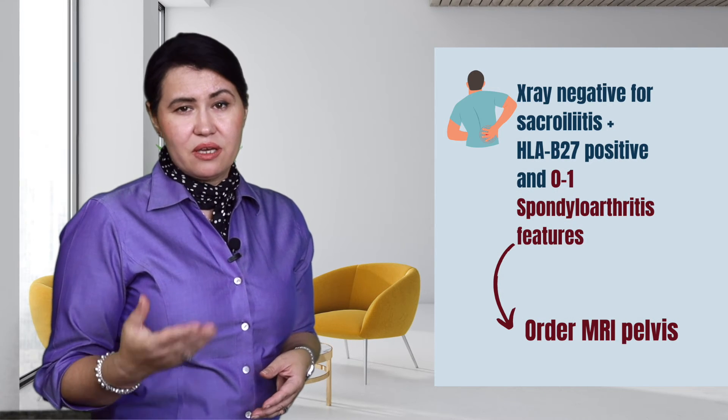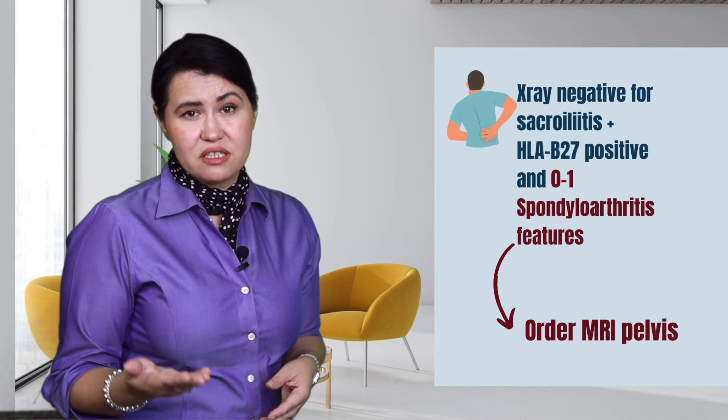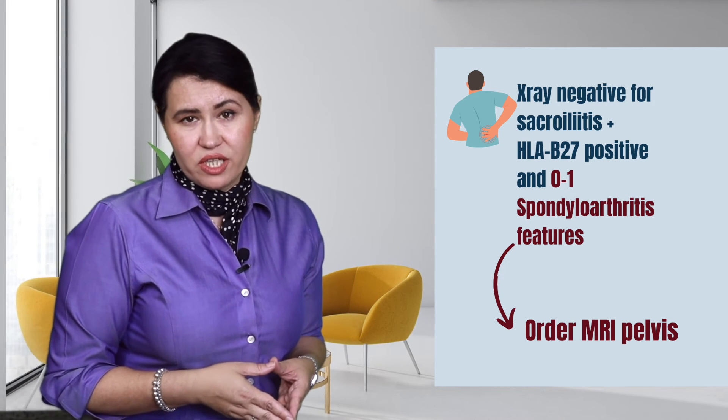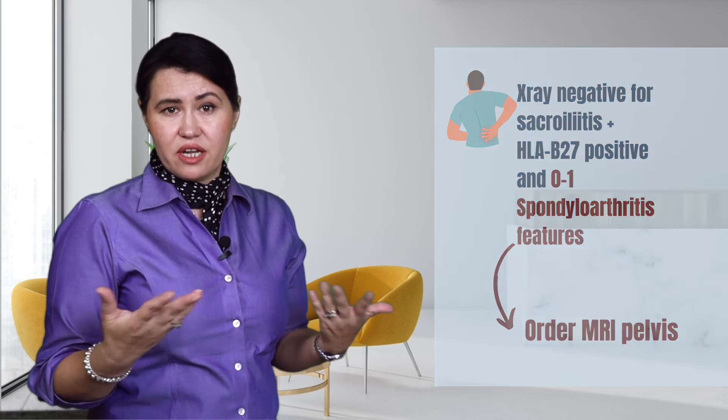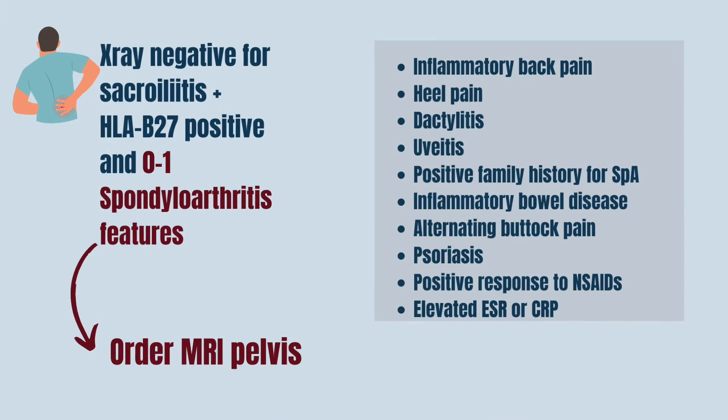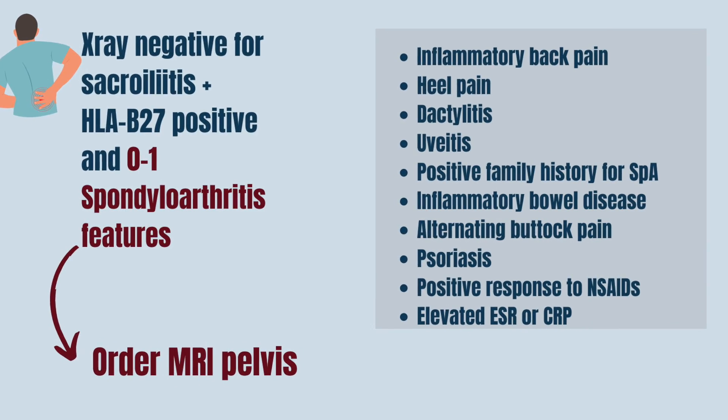Step 4: In patients without radiographic features and with 0 or only 1 Spondyloarthritis feature, but still with a positive HLA-B27, I will evaluate them further with an MRI. If the MRI is positive, then it's enough for me to make the diagnosis. Once again, this will be called non-radiographic axial spondyloarthritis.